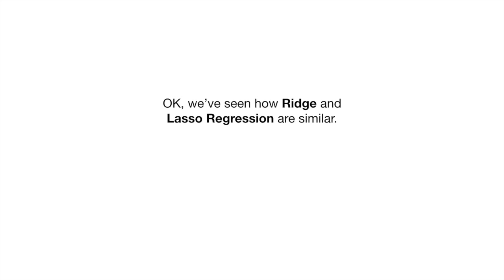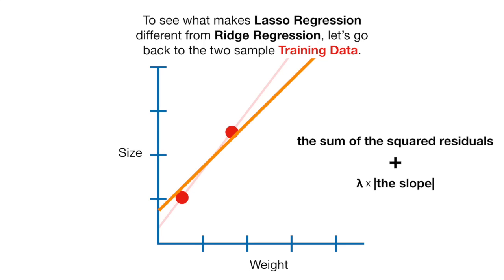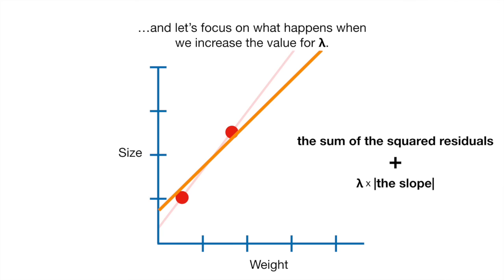Okay, we've seen how Ridge and Lasso Regression are similar. Now let's talk about the big difference between them. To see what makes Lasso Regression different from Ridge Regression, let's go back to the two sample training data, and let's focus on what happens when we increase the value for lambda.